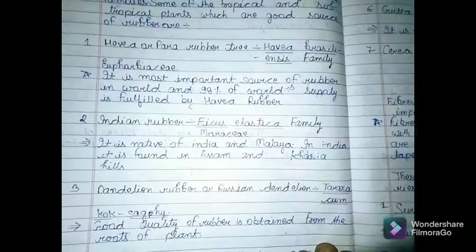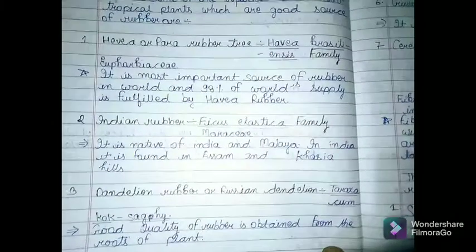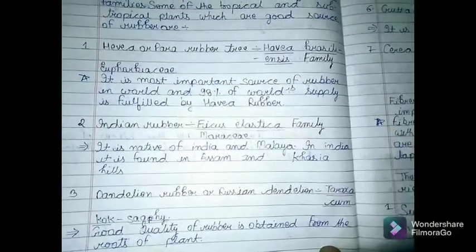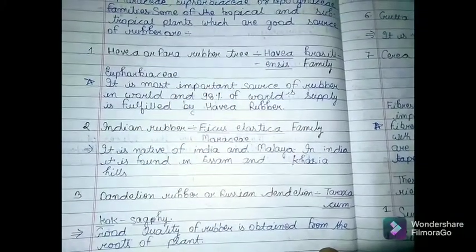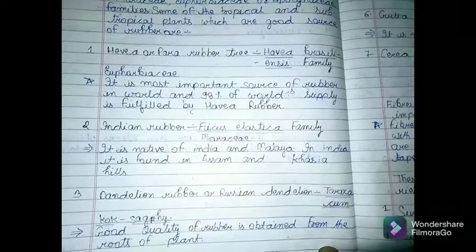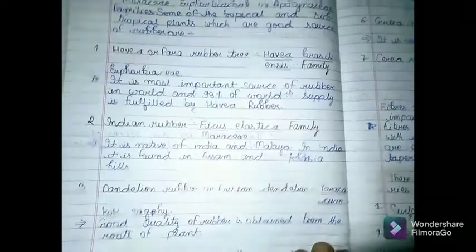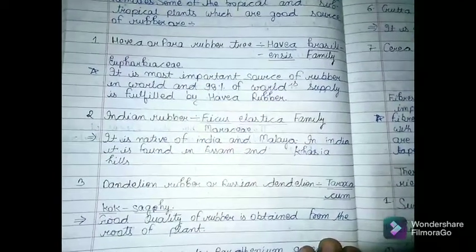Indian rubber, Ficus elastica, family Moraceae, is native of India and Malaya. In India it is found in Assam and Khasi hills.